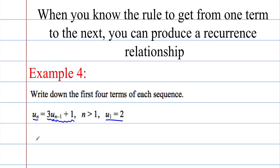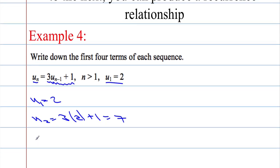Let's write down the first four terms. u(1) is given — it's 2. u(2): to get the next term we do three times the term before (which is 2) and add one. Three times 2 is 6, and 6 and 1 is 7. So that's u(2). u(3) is going to equal three times the previous term, which is 7, so three times 7 plus 1. 21 and 1 is 22.